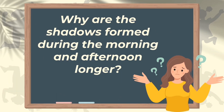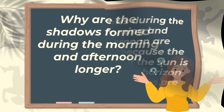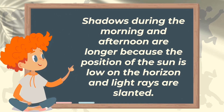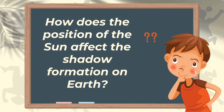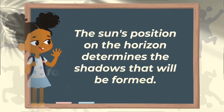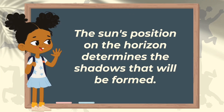Why are shadows formed during morning and afternoon longer? Shadows during the morning and afternoon are longer because the position of the sun is low on the horizon and the light rays are slanted. How does the position of the sun affect shadow formation on earth? The sun's position on the horizon determines the shadows that will be formed.